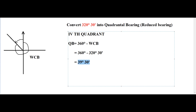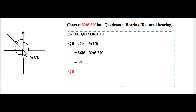So we get the quadrantal bearing angle as 39 degrees 30 minutes. But for a quadrantal bearing we need to specify its quadrant. The 39 degrees 30 minutes comes in the 4th quadrant, hence it is in the north-west quadrant. So we designate it as North 39 degrees 30 minutes West. This is how the problem is solved.